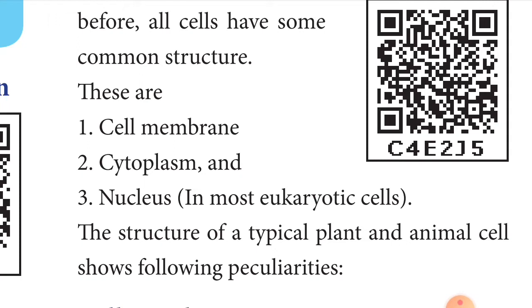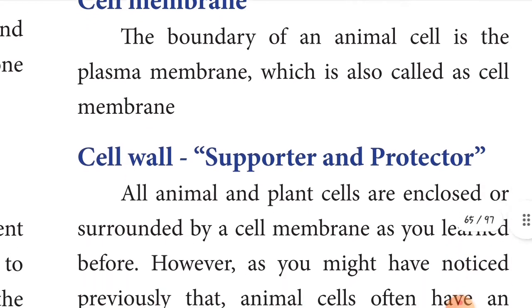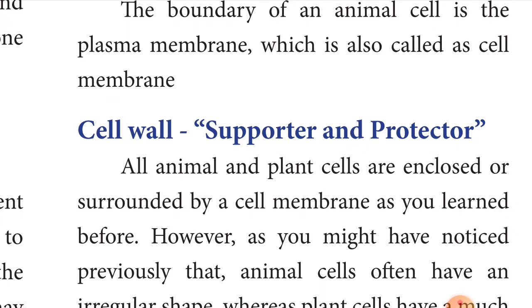Now let's see the very important topic: the cell membrane. The boundary of the animal cell is the plasma membrane, which is also called the cell membrane. This is a very important two-mark question: the boundary of the animal cell is the plasma membrane.